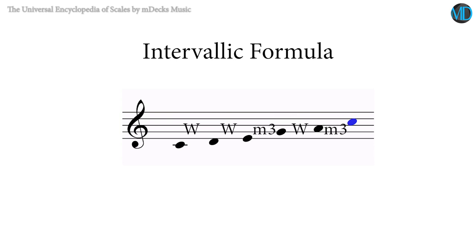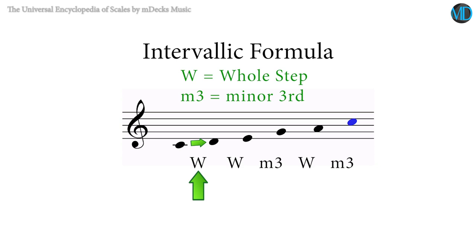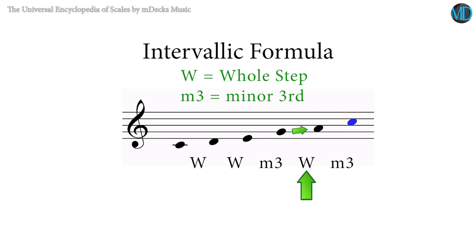Let's look at the major pentatonic scale: C, D, E, G, and A with C as the designated root. C to D is a major second — we will write it as W, representing the whole step from C to D. Then D to E, another W. Then E to G is a minor third, so we write lowercase m and then three. Then G to A, another W. We will complete the octave, making the intervallic formula a circular pattern, which will become handy later on.